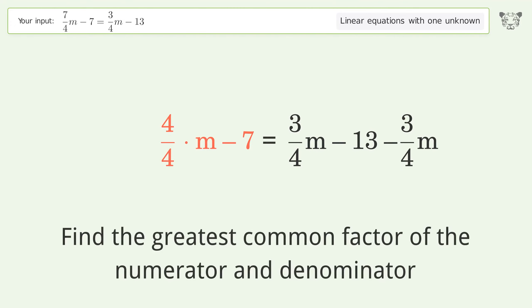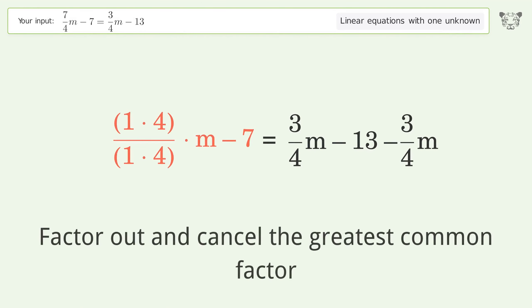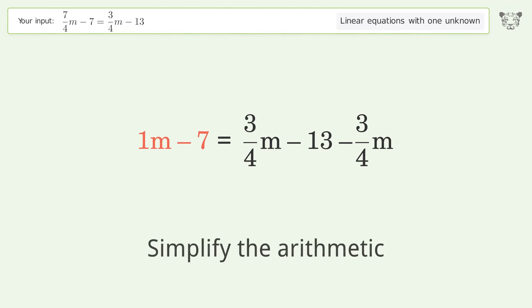Find the greatest common factor of the numerator and denominator. Factor out and cancel the greatest common factor. Simplify the arithmetic.